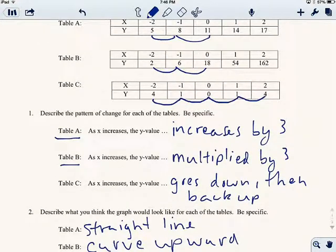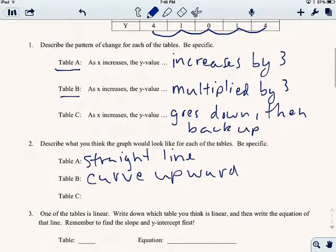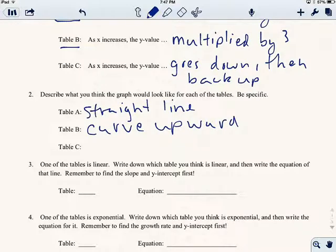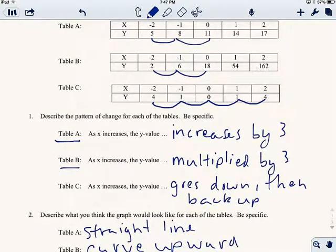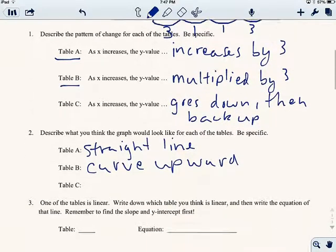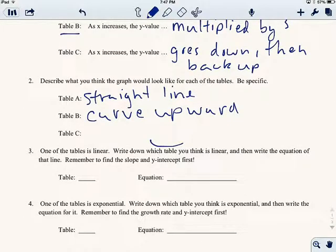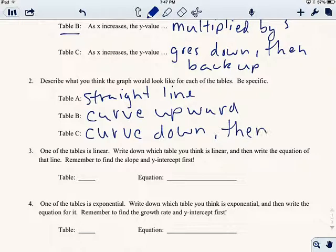And then Table C, let's think about Table C. So we expect Table C to go down, then back up. And it's not going down at a steady rate either. So it goes down 3 here, but then only 1 here. Then it goes back up 1 and then 3. So maybe we'll expect this to, now I also know what it's going to look like already, so maybe I'm cheating. But let's expect this to curve down, then back up. Let's hope that makes sense to you guys.